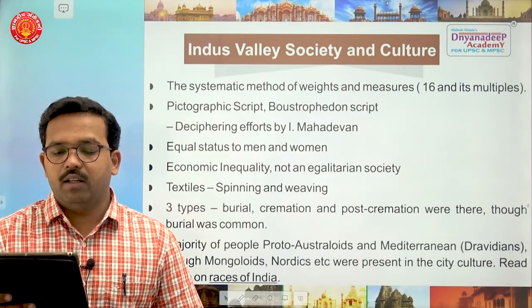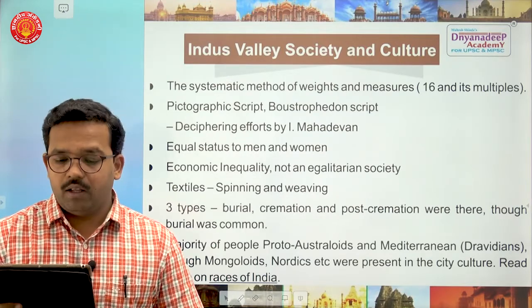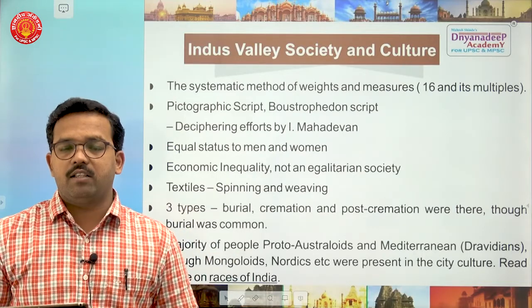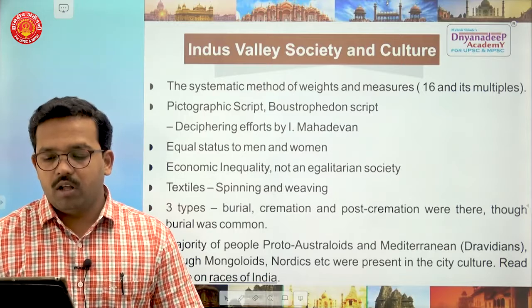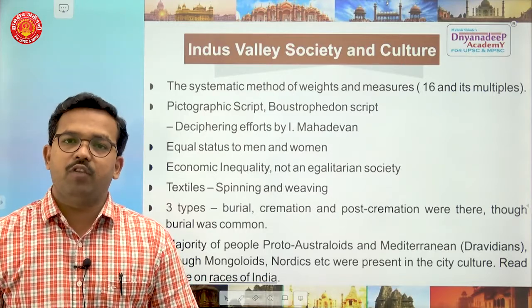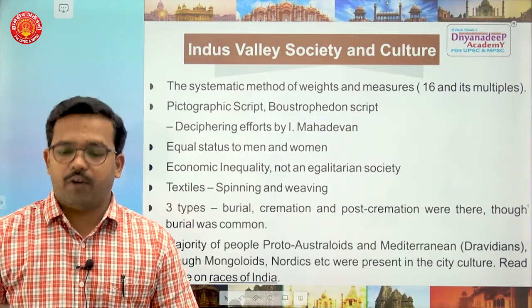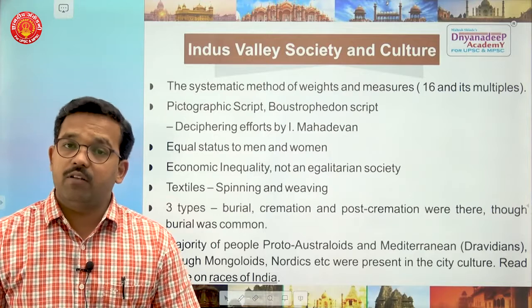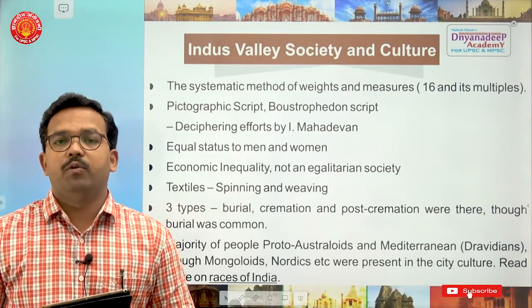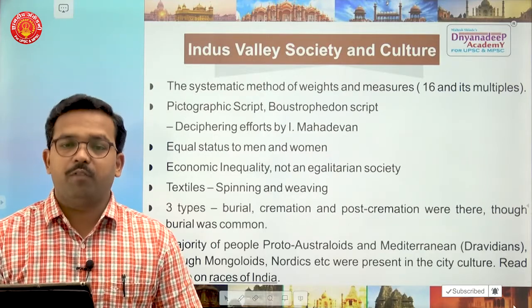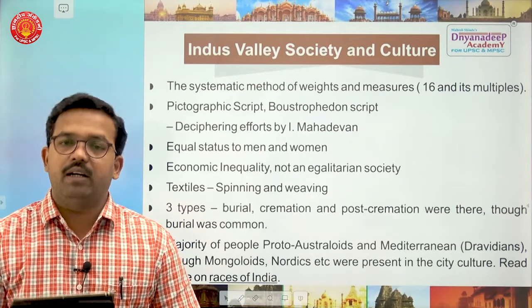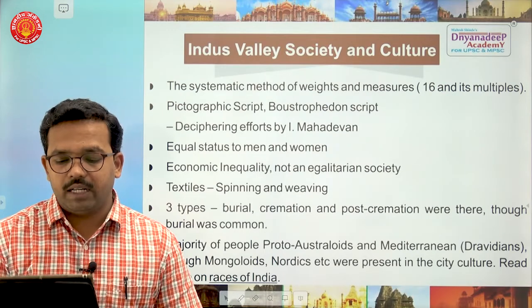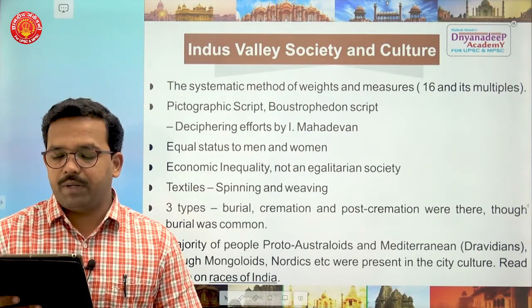There was equal status for men and women. However, economic inequality was present and society was not egalitarian — men and women had equal status but society was divided on economic grounds. In textile, spinning and weaving was found. Three types of burials were found: burial, cremation, and post-cremation burial, though burial was the most common. Majority of people belonged to proto-Australoid and Mediterranean (Dravidian) races, though Mongoloid and Nordic people were also present.